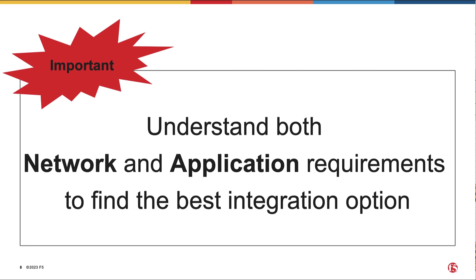Which high availability options for Big-IP LTM are you planning to deploy? An independent active-standby HA pair in each data center? Or an active-standby HA pair stretched across data centers? Or others? How do we handle return traffic to ensure both directions of traffic go through the same Big-IP LTM in the same data center? Are you planning to use SNAT (Source Network Address Translation), PBR (Policy Based Redirect), or neither?